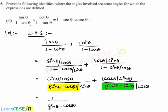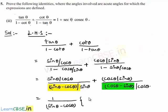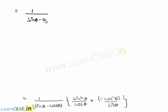By taking 1 by sine theta minus cos theta common, we get inside the bracket: numerator sine theta by cos theta remains the same, and if we send sine theta to the top then it becomes sine squared theta by cos theta. Plus, here it will be minus 1 as we took sine theta minus cos theta common, so if we send cos theta to the top then it becomes cos squared theta by sine theta. That will be equal to 1 by sine theta minus cos theta, into sine squared theta by cos theta minus cos squared theta by sine theta.